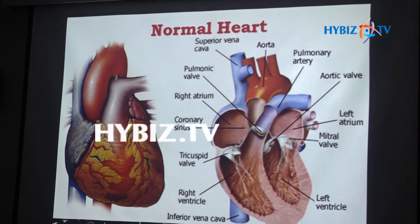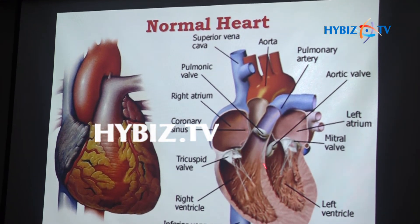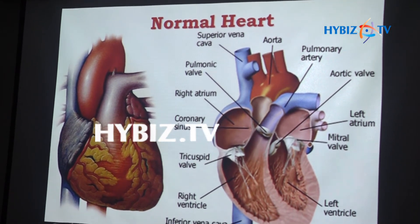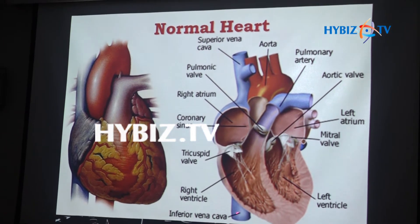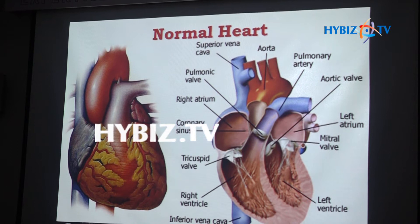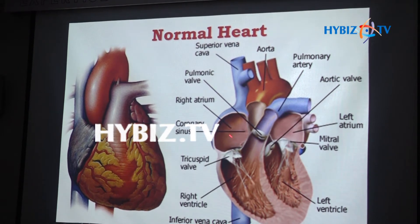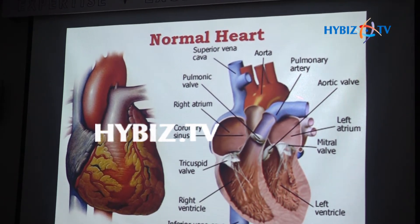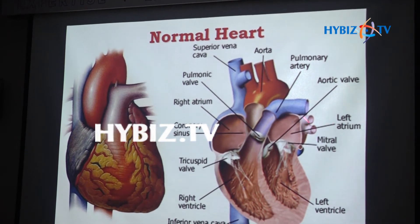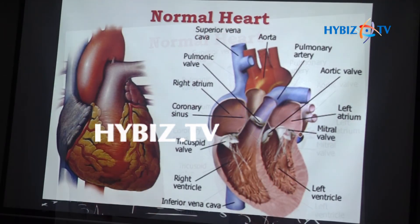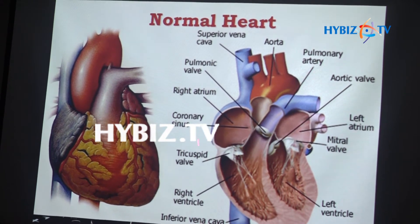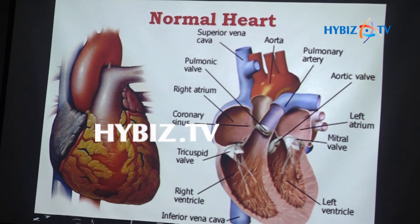If you cut open the heart and see, the heart is basically made up of four chambers — two chambers on the right side and two on the left side. The walls of the heart are made up of muscle. Blood from various parts of the body reaches the right side of the heart, called the atrium, and from there comes into the lower chamber called the ventricle, which pumps blood to the lungs. The lungs oxygenate the blood and put it back onto the left side of the heart. In between the chambers there are doors called valves. These are the basic structures of the heart.